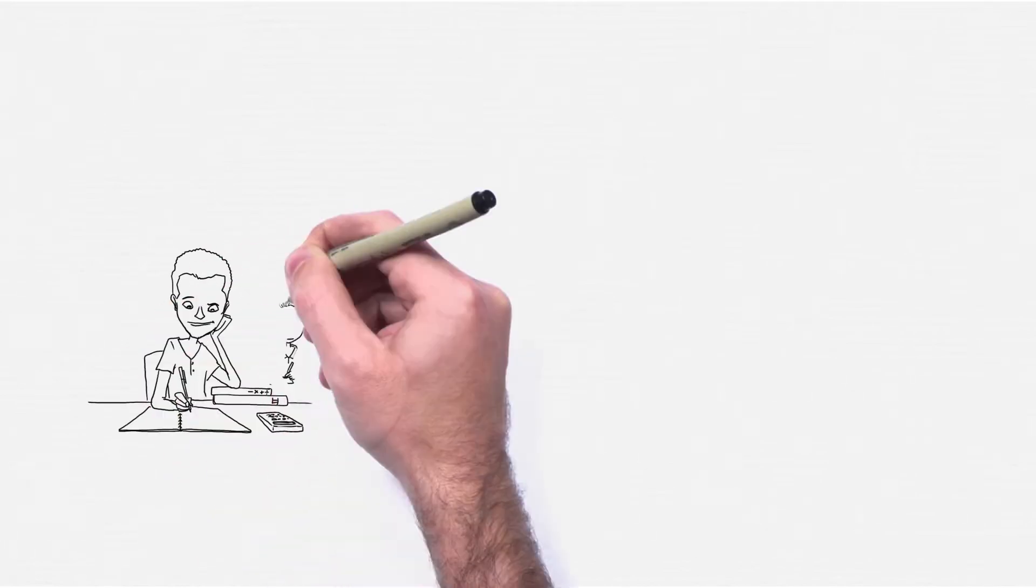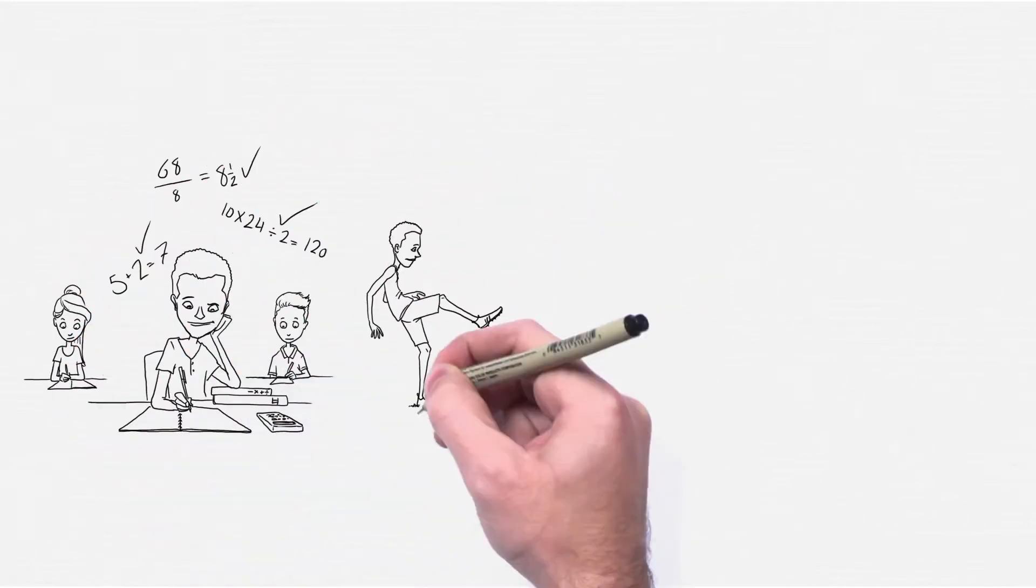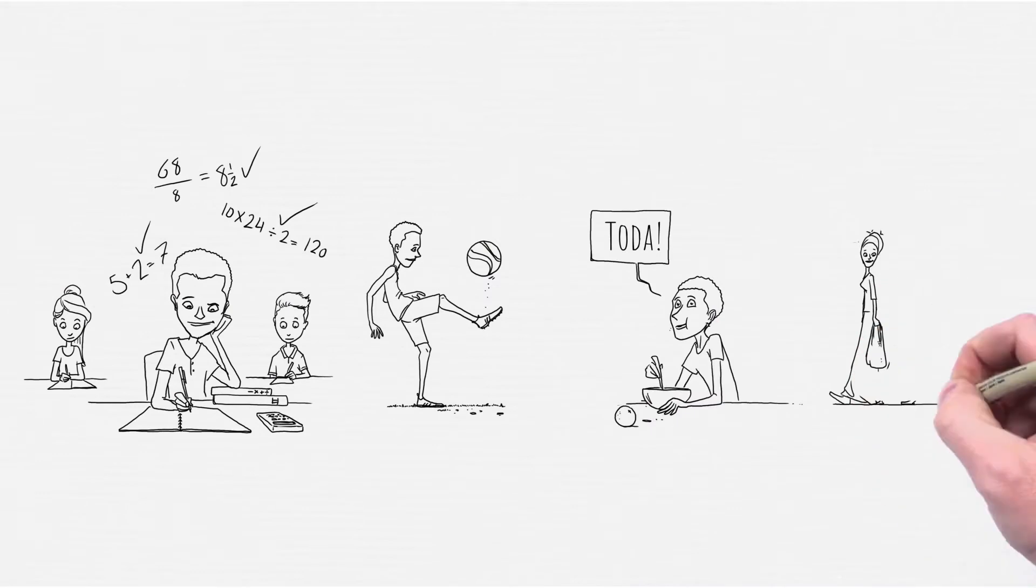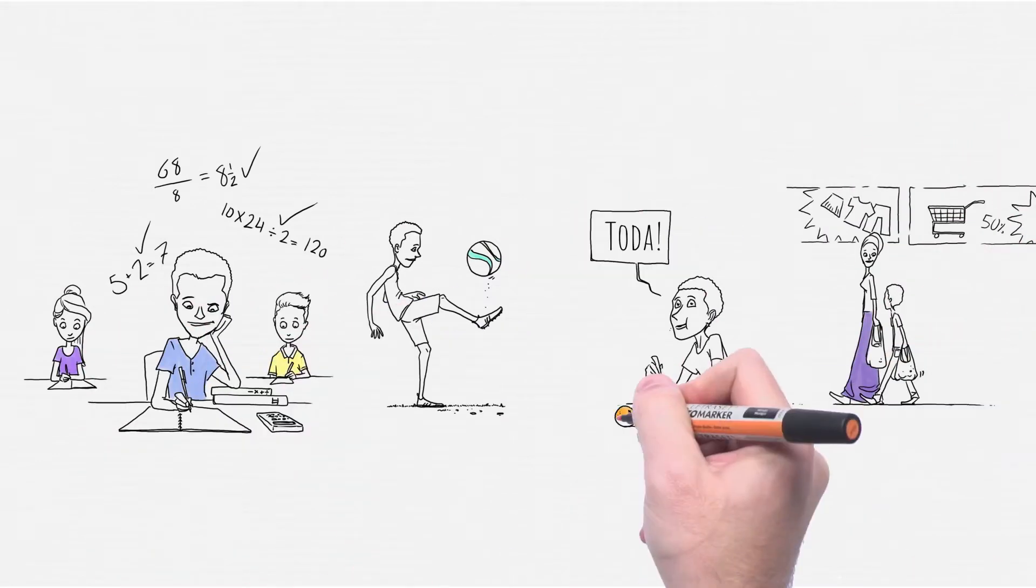When I was little, I was good. I loved maths and I was great at sports. I spoke Ivrit quickly, so I always helped mom and went to the shops with her.